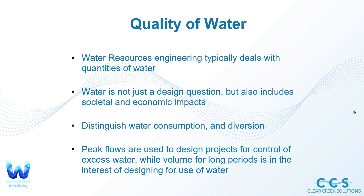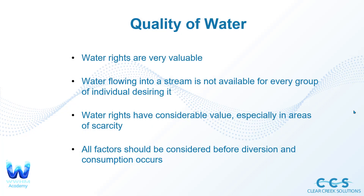Water is not just a design question but also includes societal and economic impacts. In a perfect world you could design whatever you want, but societal and economic impacts always play a role in engineering designs, and water resources engineering is no different. We also need to distinguish water consumption from diversion. In an area like the Pacific Northwest where there's tons of rainfall, we're often not utilizing all that water — it's about diverting it appropriately using flood control methods so it doesn't cause erosive flows and gets back into the natural environment. Peak flows are often used to design projects for control of excess water, while volume is used for longer-period design considerations.